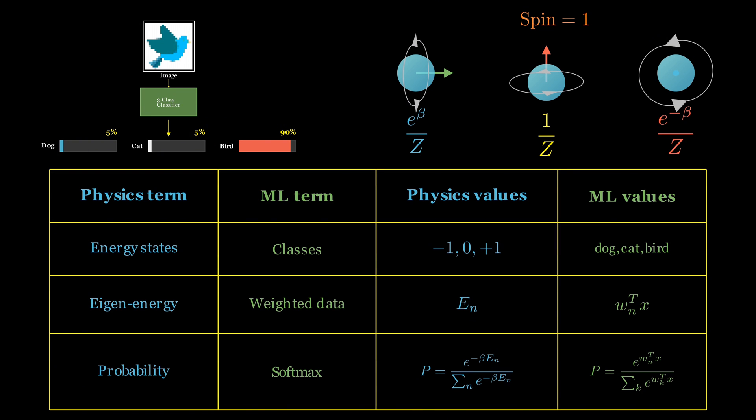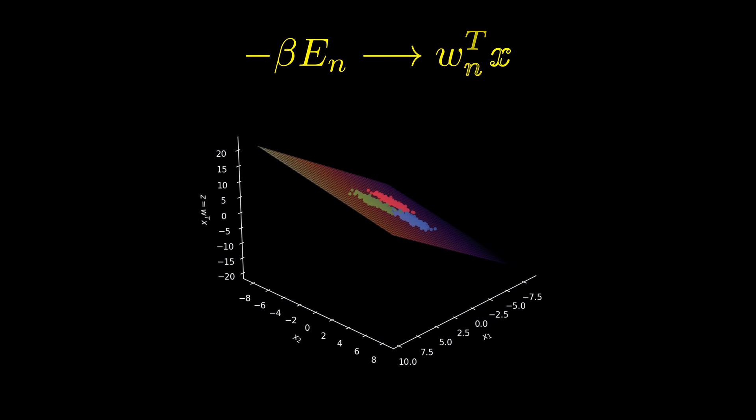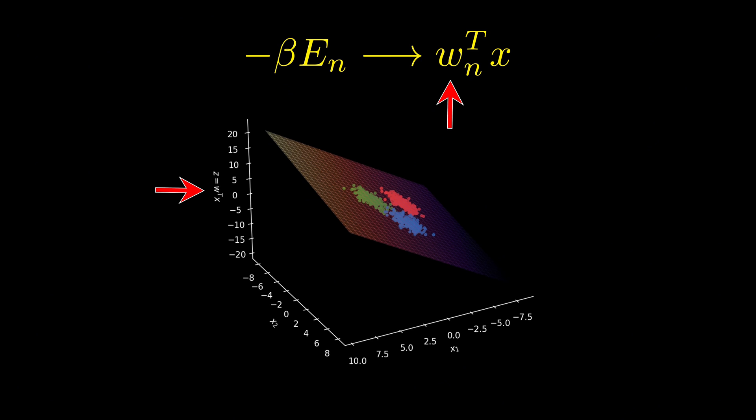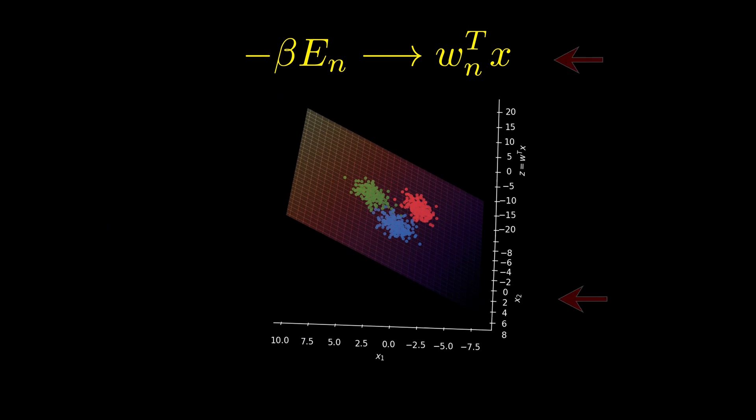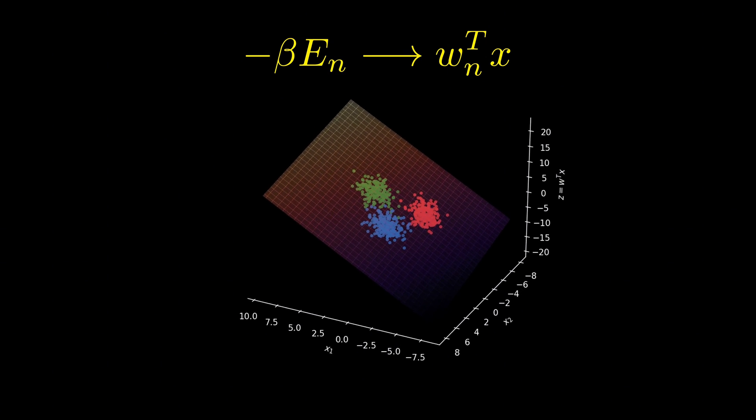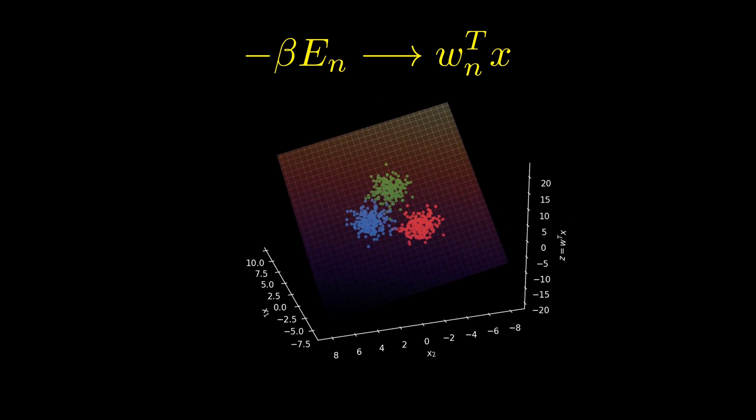Let's build this translation dictionary step-by-step. In this translation, we say the energy levels correspond to the classes, and the energy values themselves correspond to the weighted scores of each class computed from the dataset. Mathematically, we make this substitution. Where W sub N is the weight vector associated with class N, and X is the data point or feature vector. In our example, it is the pixel values of the image.